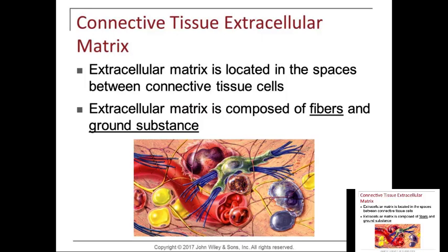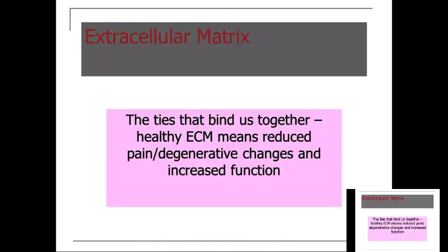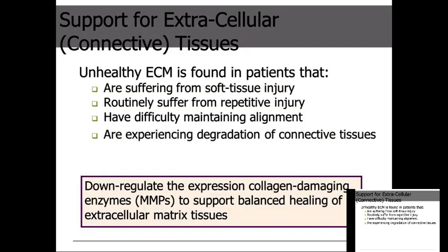The ECM is located in the spaces between connective tissue and is made up of fibers and ground substance — it's what binds us together. A healthy extracellular matrix means reduced pain, reduced degeneration, and good function. The opposite is true: an unhealthy ECM means increased pain, increased degenerative changes, and decreased function. Unhealthy ECM is found in people who suffer from soft tissue injuries — straining a muscle, spraining a ligament, straining their lower back, spraining discs, having disc lesions.